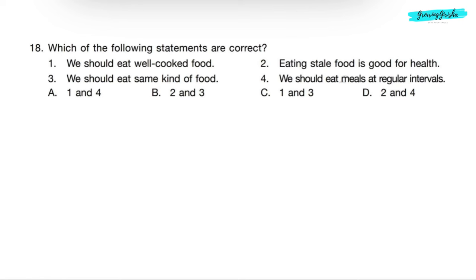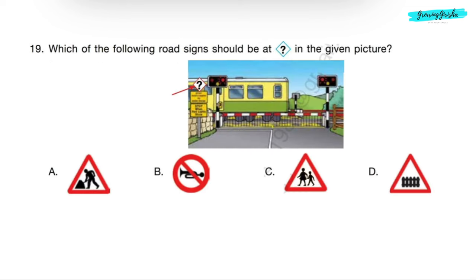Question 18: Which of the following statements are correct? 1. We should eat well-cooked food. 2. Eating stale food is good for health. 3. We should eat same kind of food. 4. We should eat meals at regular intervals. Our body needs different types of food to remain healthy so that it can get all types of nutrients present in different foods. Eating stale food is not good for our health as it may contain disease-causing germs and make us ill. So correct answer will be option D: statements 1 and 4 are correct.